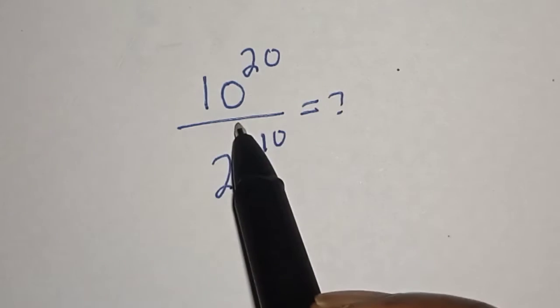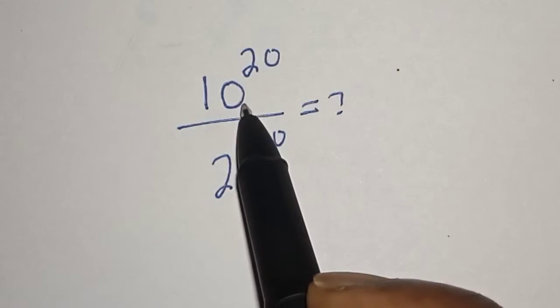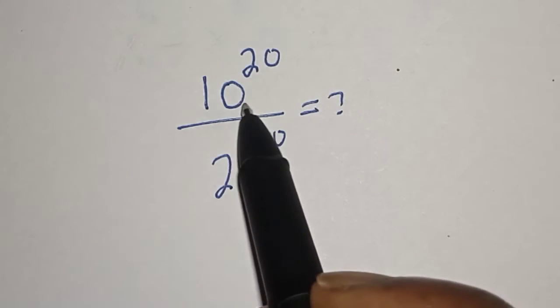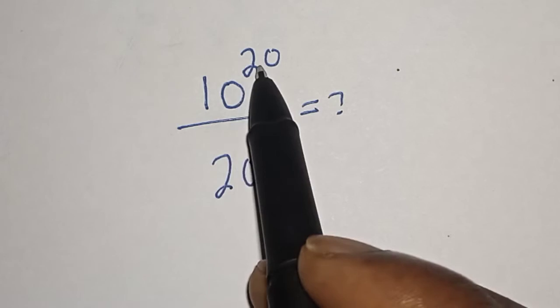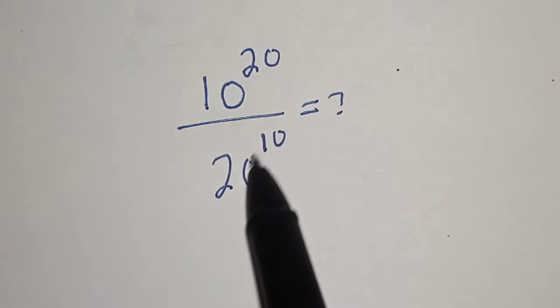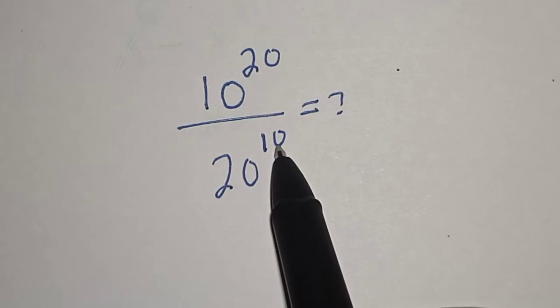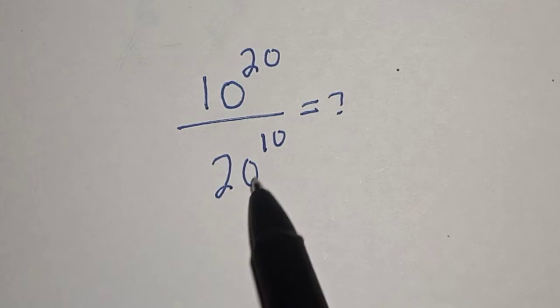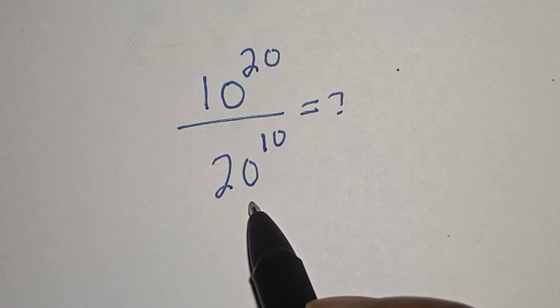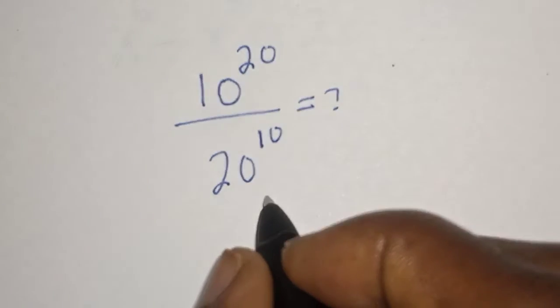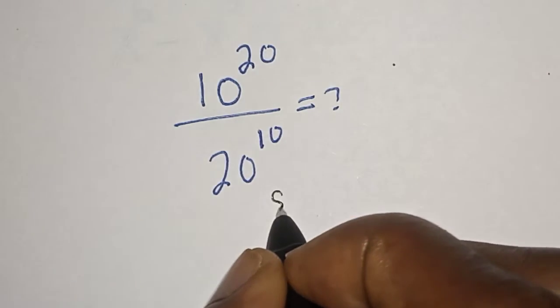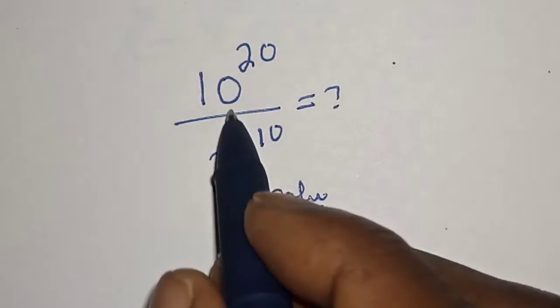Hello, welcome to Magis. In this class we want to evaluate this math problem: 10 raised to power 20 divided by 20 raised to power 10. Is it equal to 1? Like, share, comment and subscribe. Here is the solution.